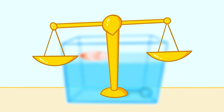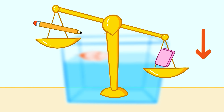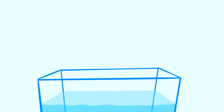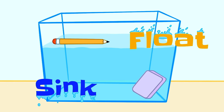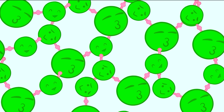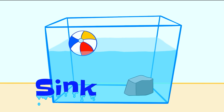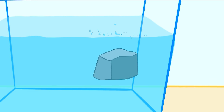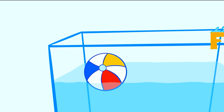Weight is how heavy something is. This eraser is heavier than this pencil. The more something weighs, the more it pulls down on everything around it. So if we drop this pencil and eraser in the water, the eraser will sink and the pencil will float. The eraser sinks because its heavier weight pulls down on the water around it. Objects are made of molecules, and density is how tightly packed the molecules are in an object. If an object has more density than the water, it will sink. The rock has more density than the water, so the rock will sink. The beach ball has less density than the water, so the beach ball will float.